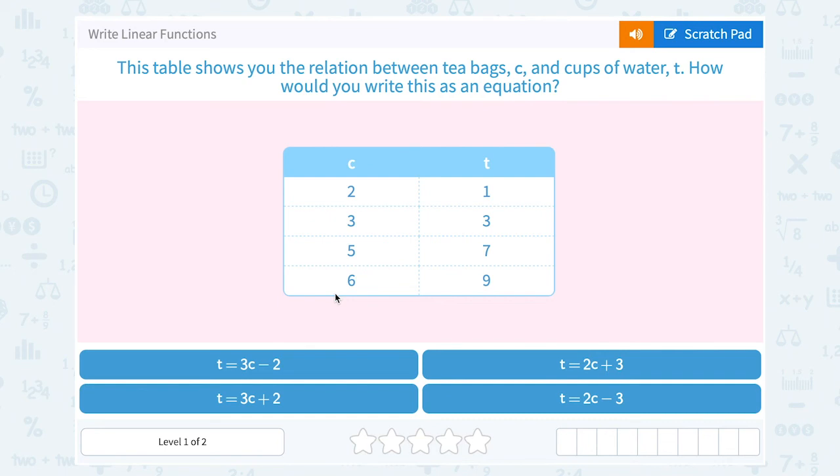Let's take a look at how to write linear functions. This table shows you the relation between tea bags C and cups of water T. How would you write this as an equation? Well, let's look at the pattern that we see in the table.